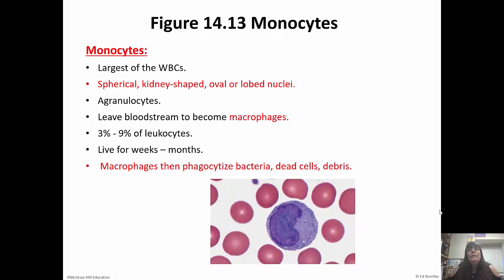Monocytes are the largest of the white blood cells. They have spherical, kidney-shaped, or oval nuclei. They are agranulocytes, so you won't see any grains. They leave the bloodstream to become macrophages, which then phagocytize bacteria, dead cells, and debris — so they're the cleanup crew. About three to nine percent of the leukocytes are monocytes, and they live for weeks or even months.